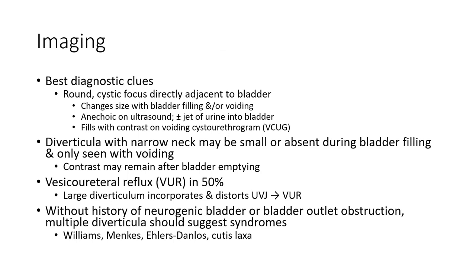Fills with contrast on voiding cystourethrogram (VCUG). Diverticula with narrow necks may be small or absent during bladder filling and only seen with voiding. Contrast may remain after bladder emptying. Vesicoureteral reflux occurs in 50%. Large diverticula may incorporate and distort the ureterovesical junction, leading to vesicoureteral reflux. Without evidence of neurogenic bladder or bladder outlet obstruction, multiple diverticula suggest a connective tissue disorder such as Ehlers-Danlos or Williams syndrome.